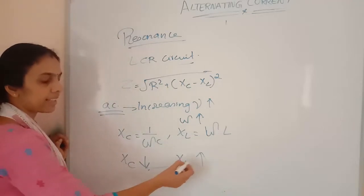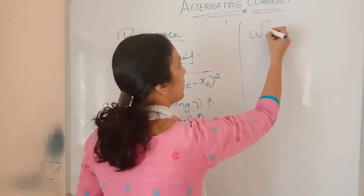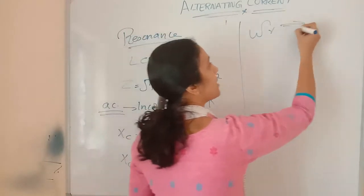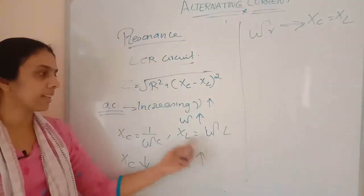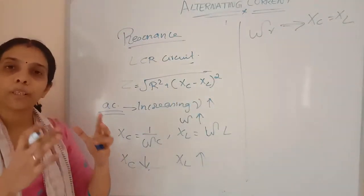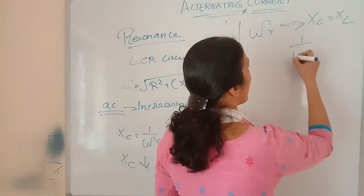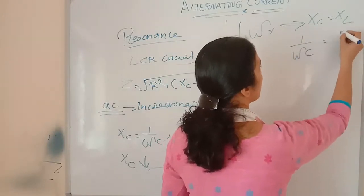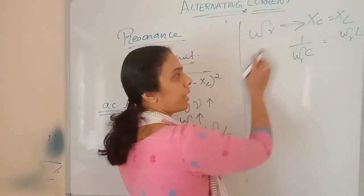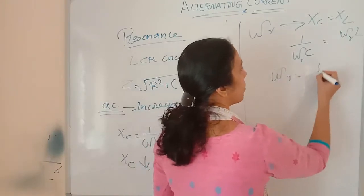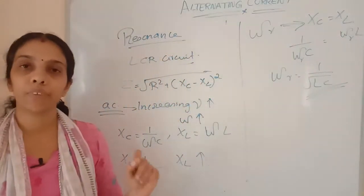If XC is decreasing and XL is increasing, at a particular frequency called omega_R, XC will become equal to XL. Because XC is decreasing and XL is increasing as we increase the frequency, at one particular point XC equals XL. So we can write it as 1/(ωC) equals ω times L. At that particular frequency omega_R, omega_R equals 1/√(LC). This is called the resonant frequency.